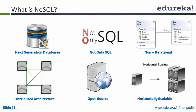Most NoSQL databases are open source, and they have capability for horizontal scaling. Horizontal scaling means you can add small commodity machines and increase the capacity of your cluster.